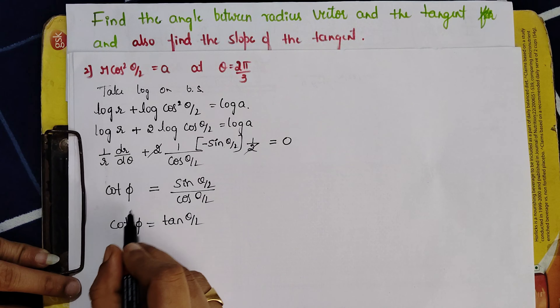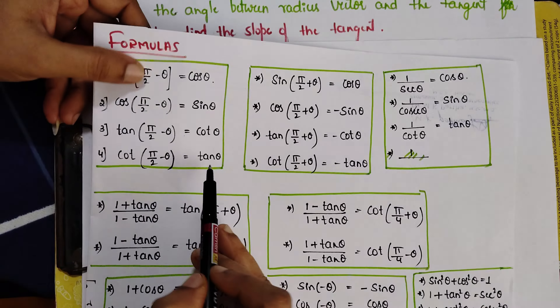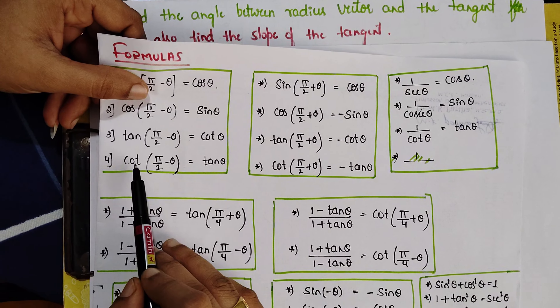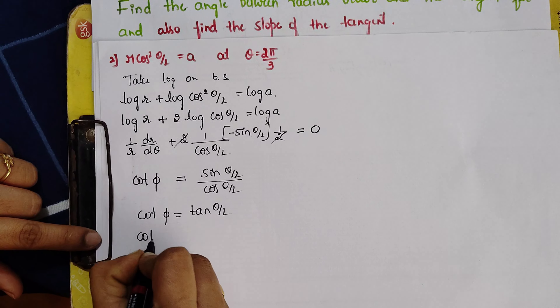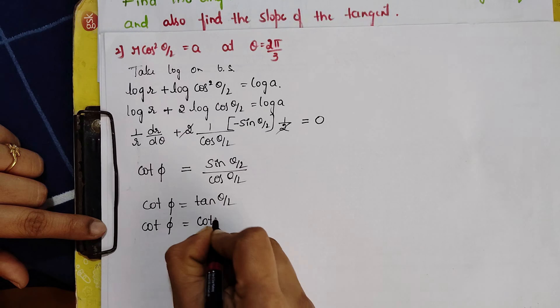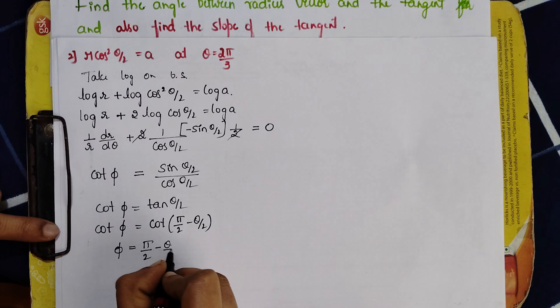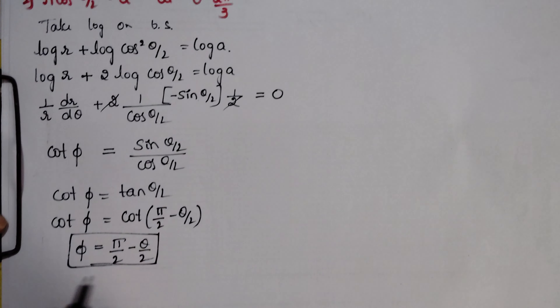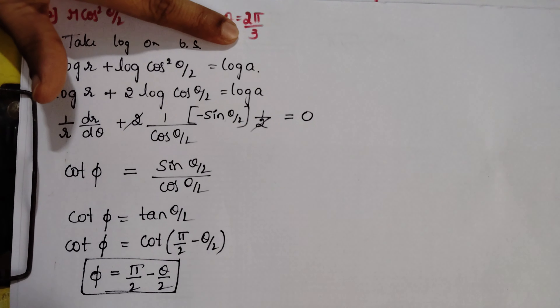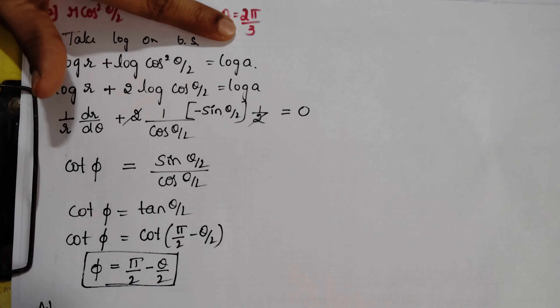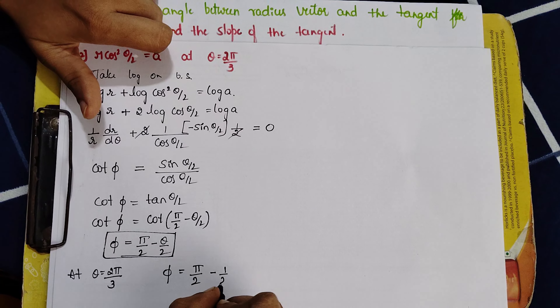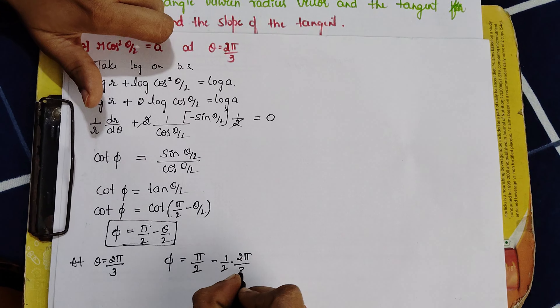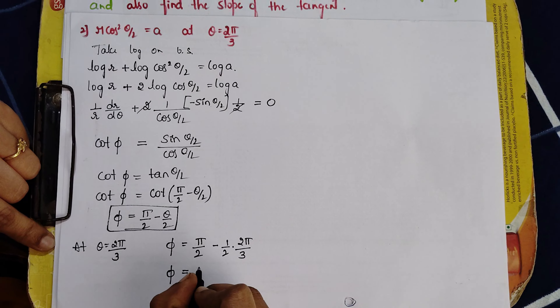Now I have to convert tan(θ/2) to a cot function. Using the identity tan(θ) = cot(π/2 − θ), I write cot φ = cot(π/2 − θ/2). Equating both sides gives φ = π/2 − θ/2. At θ = 2π/3, substituting gives φ = π/2 − (1/2)(2π/3) = π/2 − π/3 = π/6, which equals 30°.